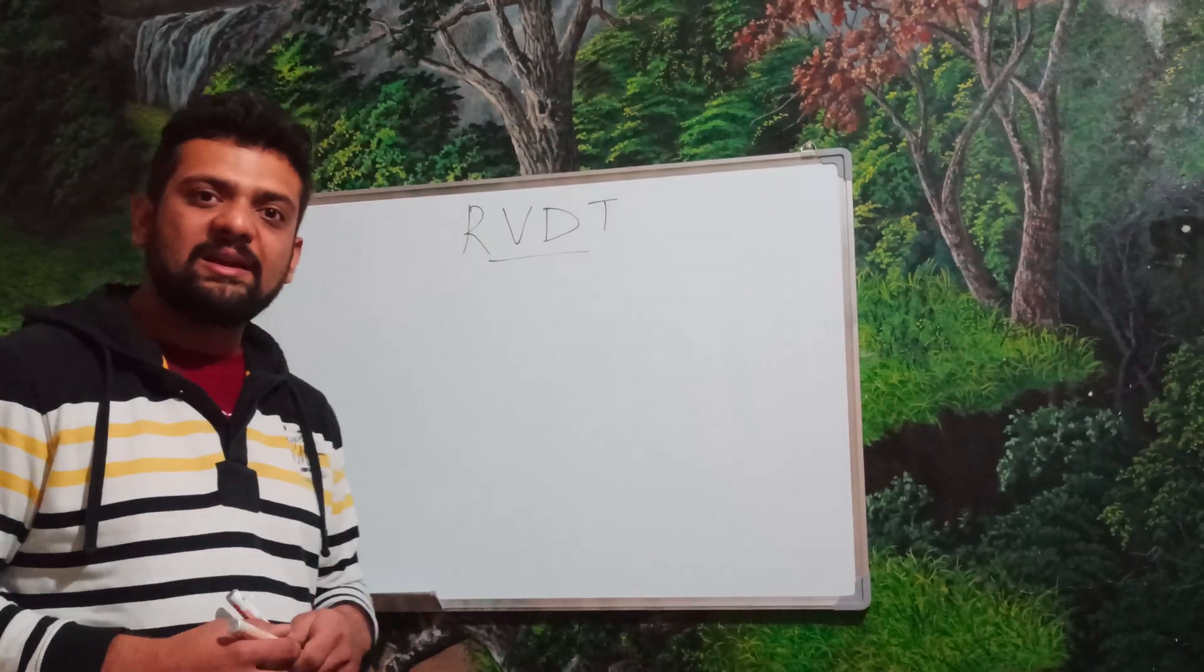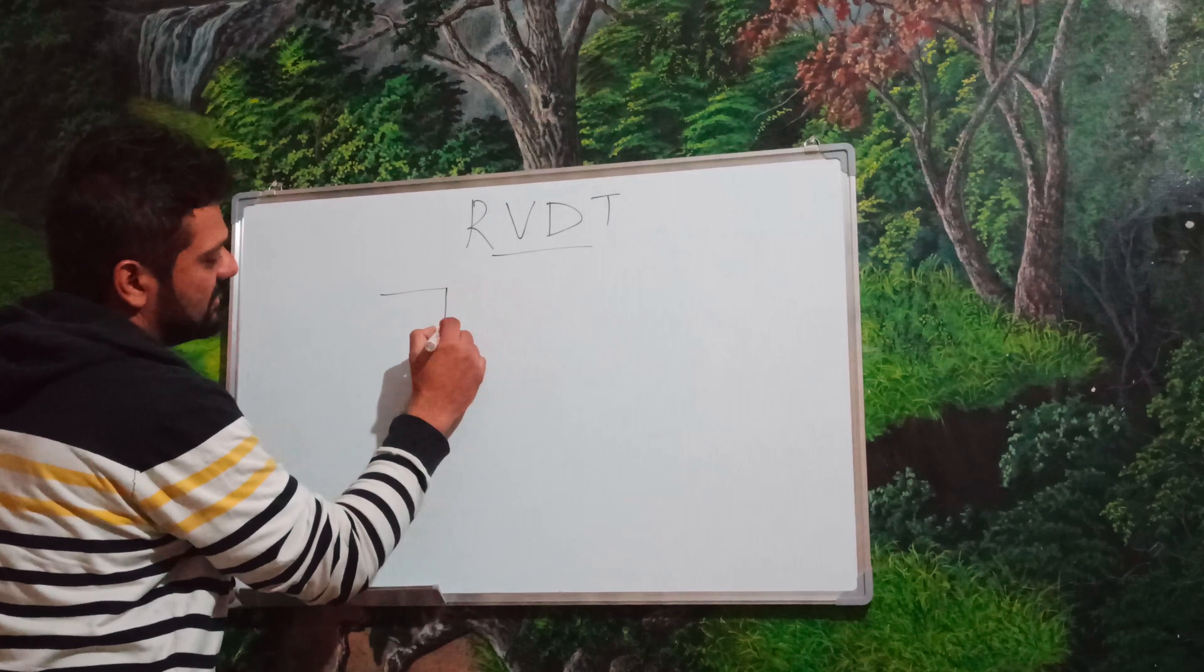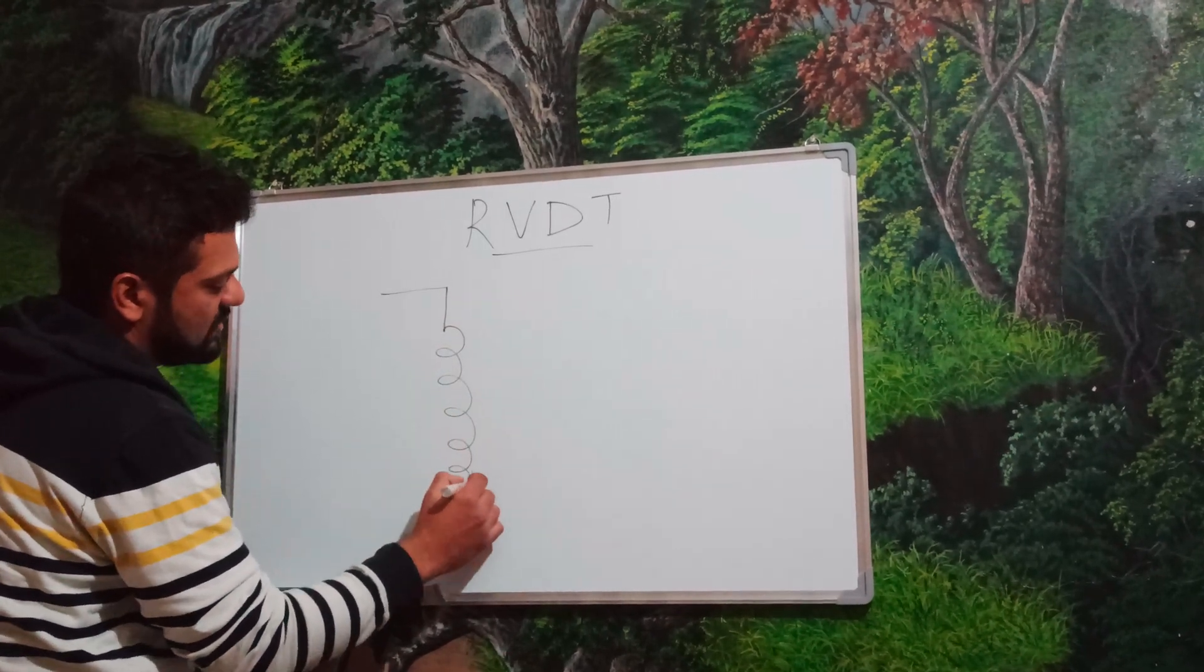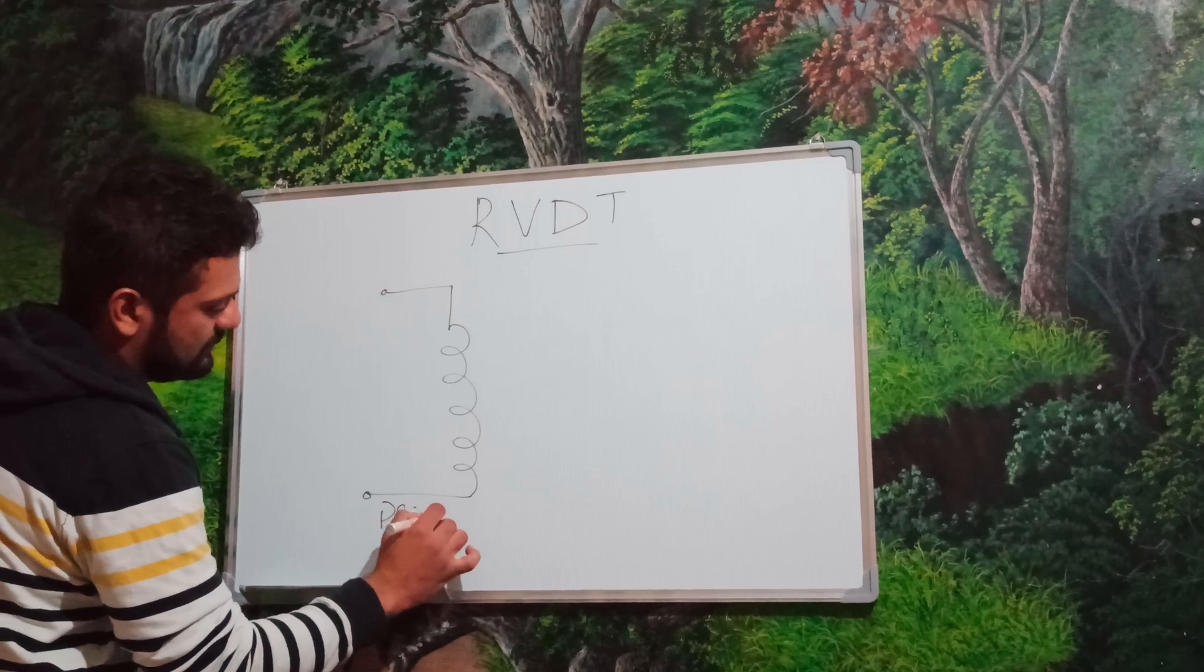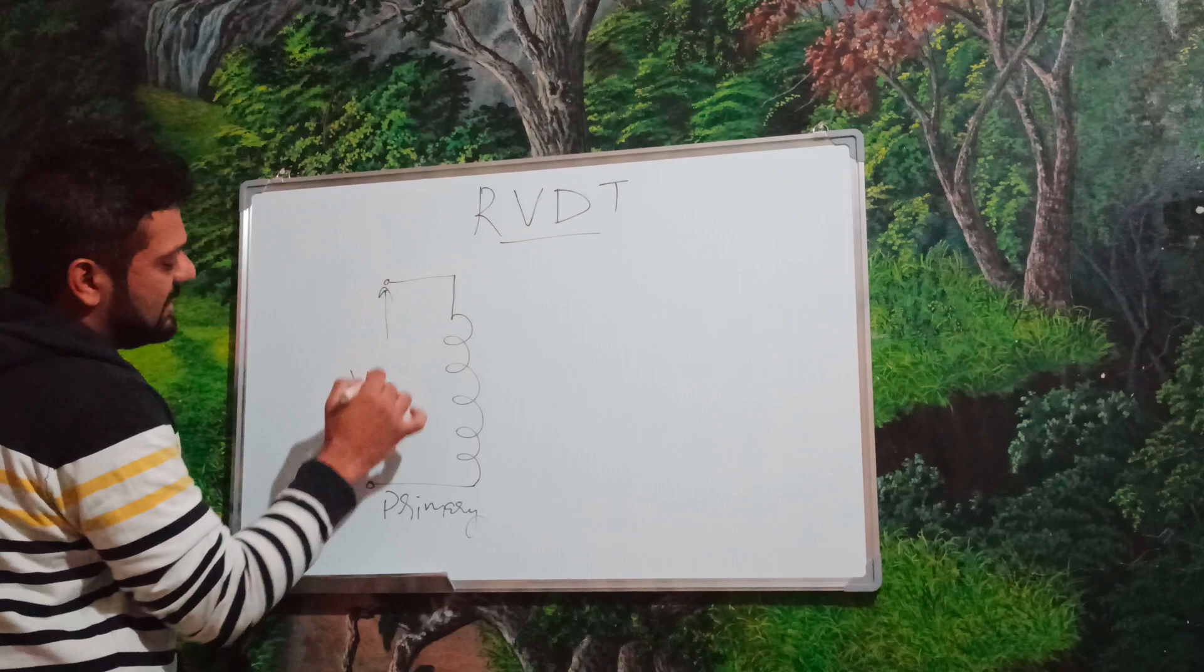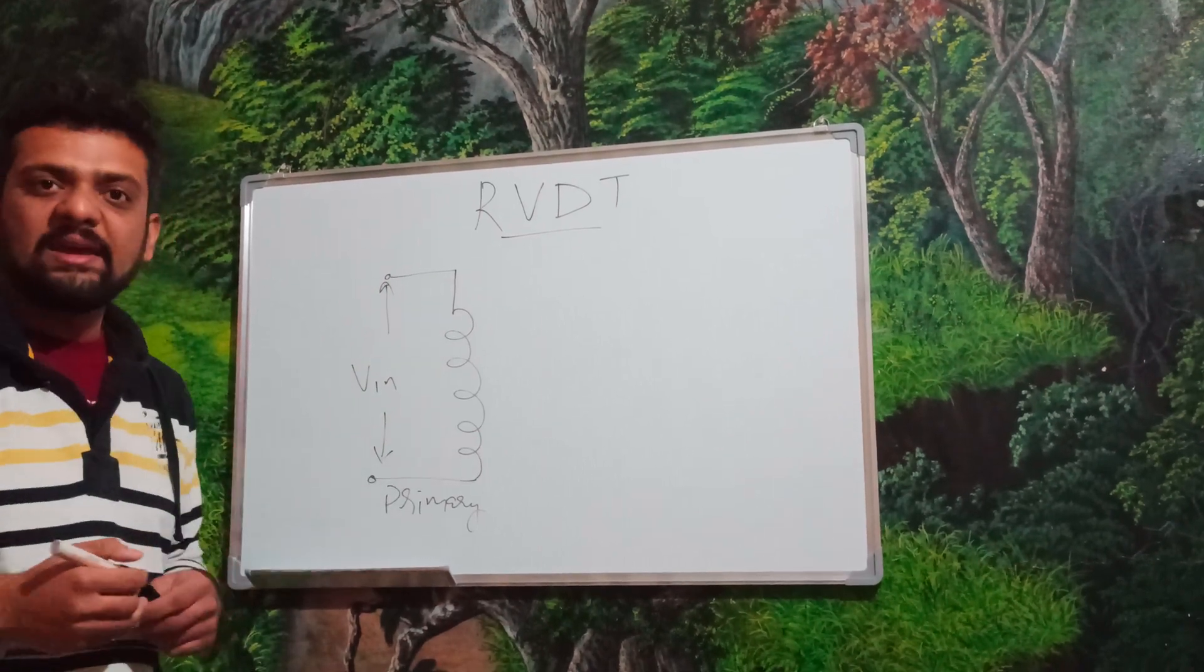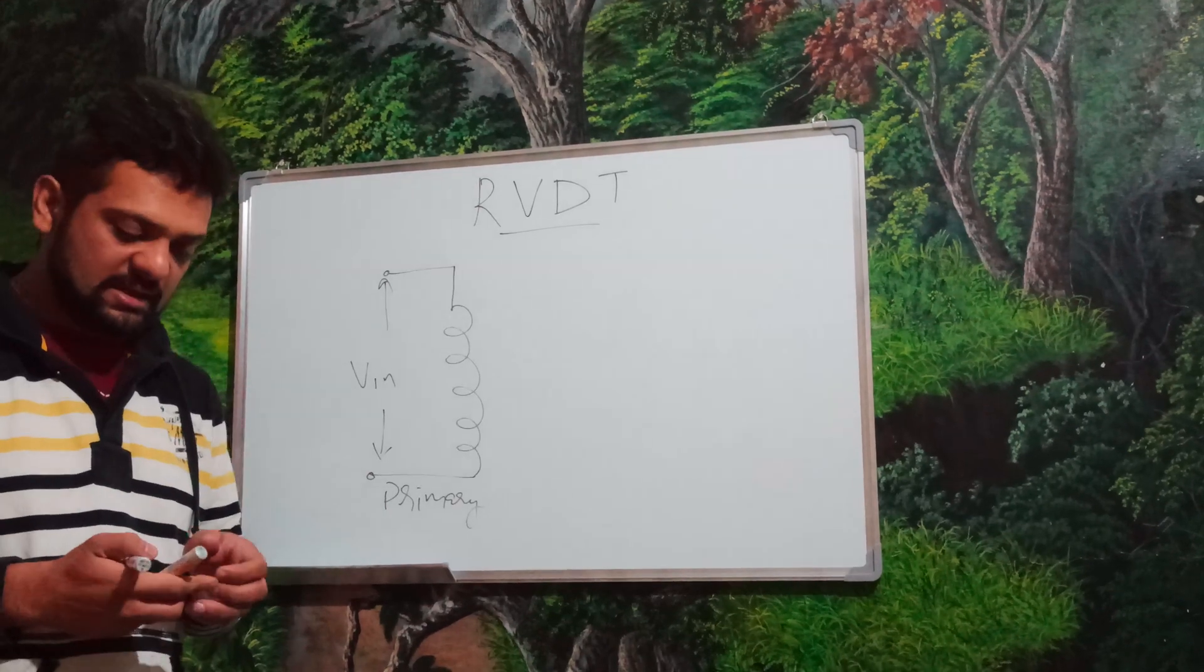So, let us go about understanding RVDT in detail using this diagram wherein on the left side as you can see there is one primary coil. So, this primary coil over here is used to supply the RVDT. V in, that is the input voltage, is given to charge the primary coil of the RVDT.